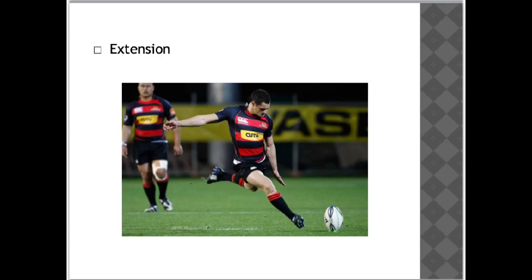Extension is the straightening of a joint so that the angle of the joint is increased. Looking at Dan Carter's left leg, which is bent at the knee, as he brings his leg through to kick the ball, his lower leg extends forward. As he drives that foot down and through to kick the ball, he performs extension at the knee — the leg is driven down away from the torso into the ball.